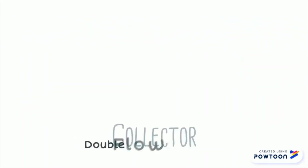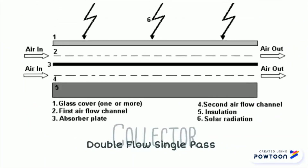Double flow single pass. The difference is the number of air flow channels, with the absorber plate separating them.